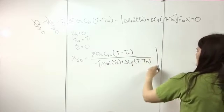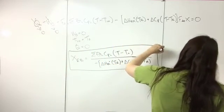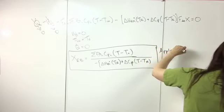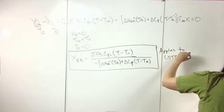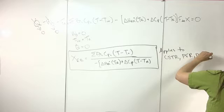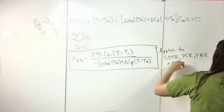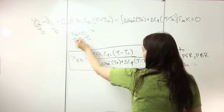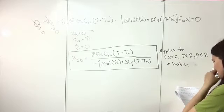This equation applies to a CSTR, PFR, PBR, and batch reactor, when work is zero and Q is zero.